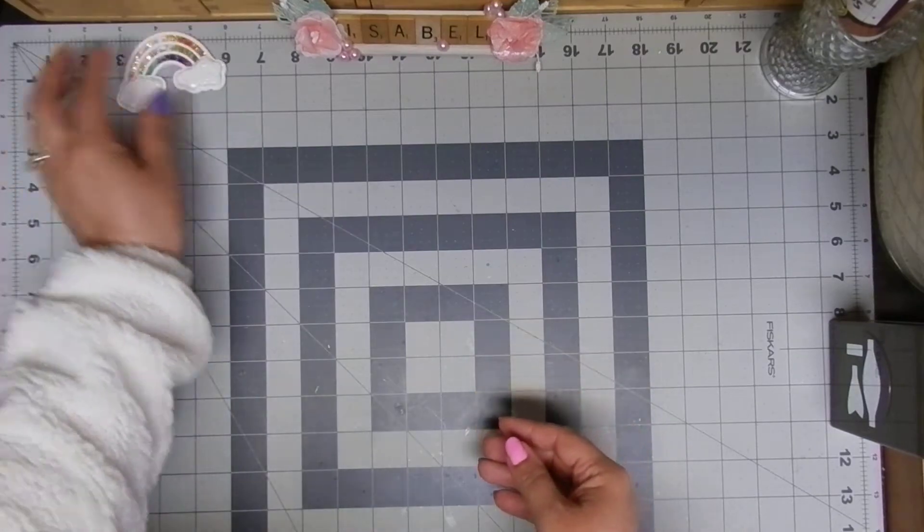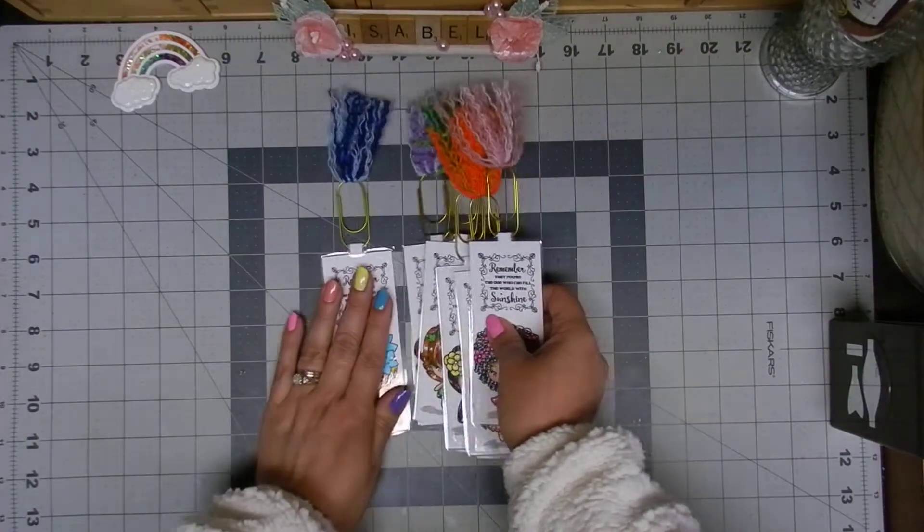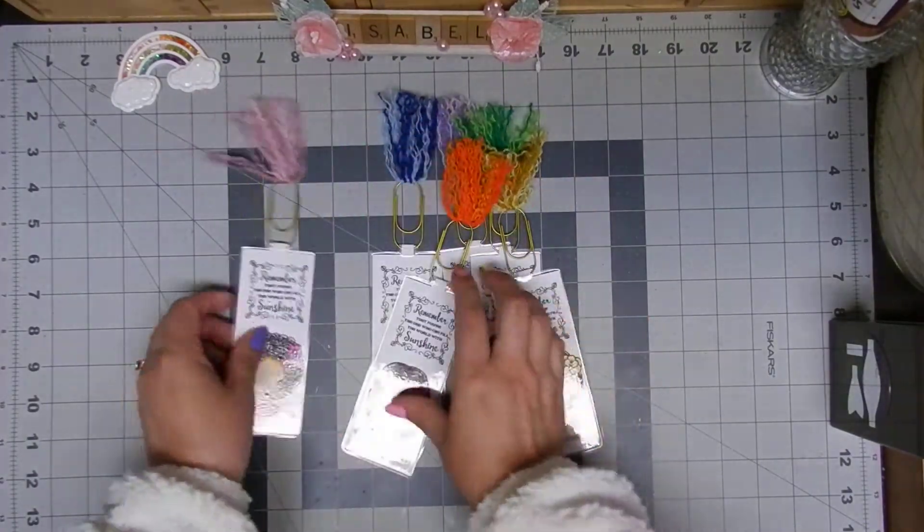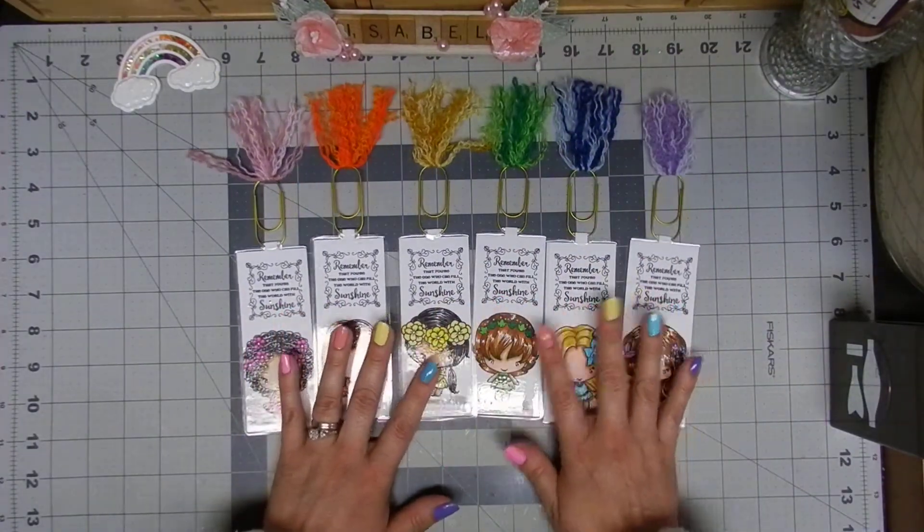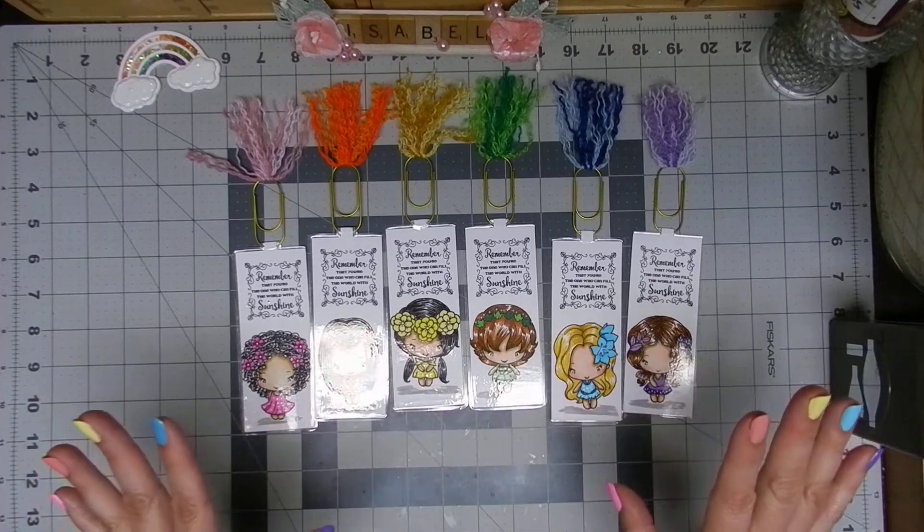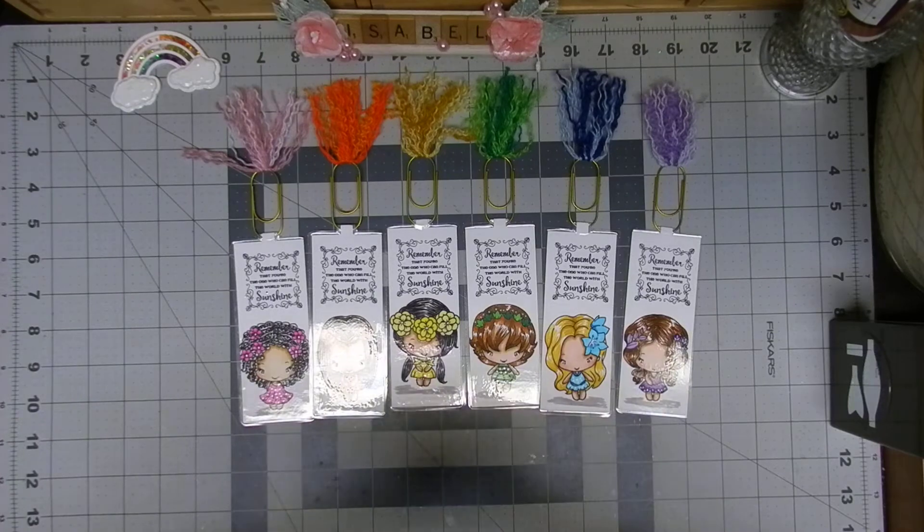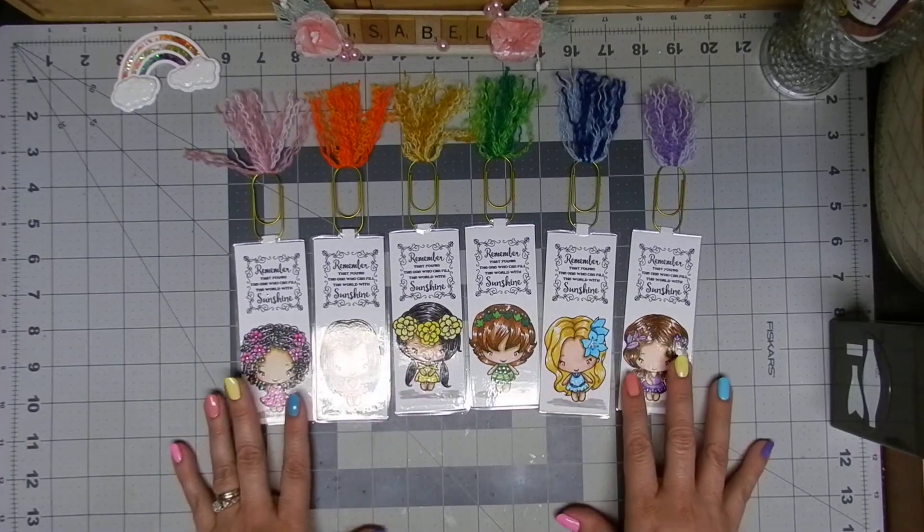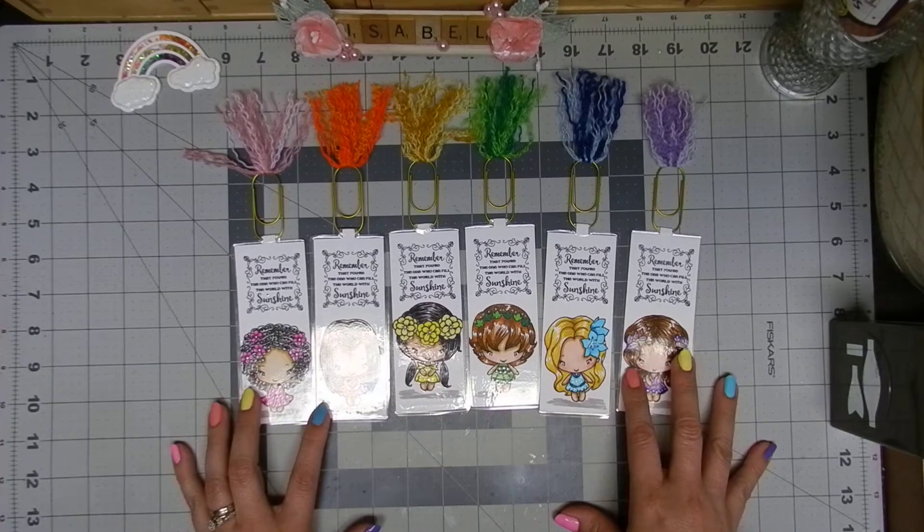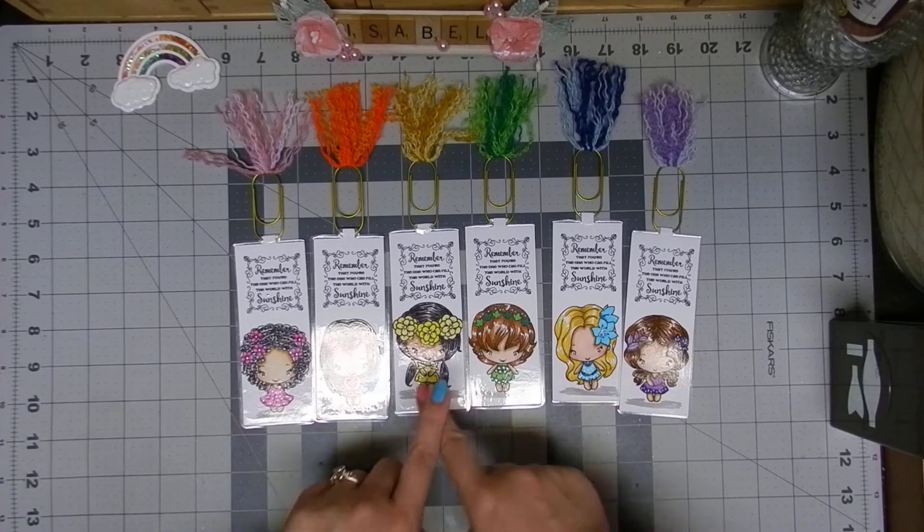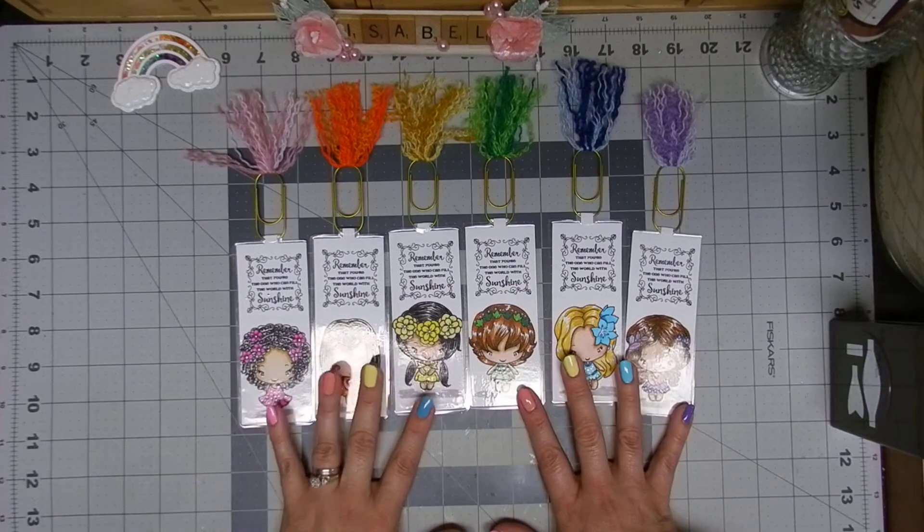What I created for this week are some bookmarks, and look at this, of course in rainbow order because that's the only way. Super easy to put together, they are very simple yet super beautiful and adorable. This is a great gift for those readers in our lives, and I think they can be made with different themes or stamps that you already have in your stash.